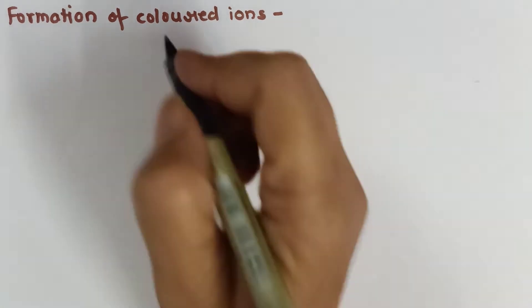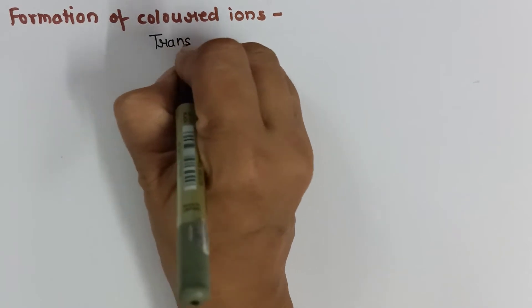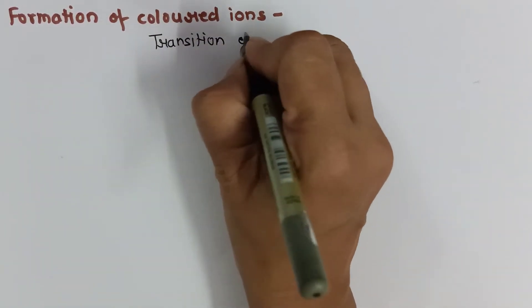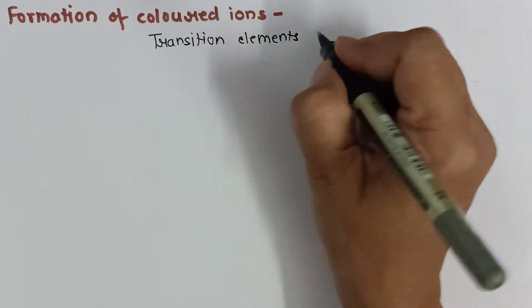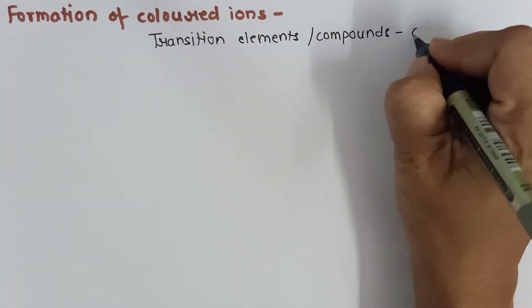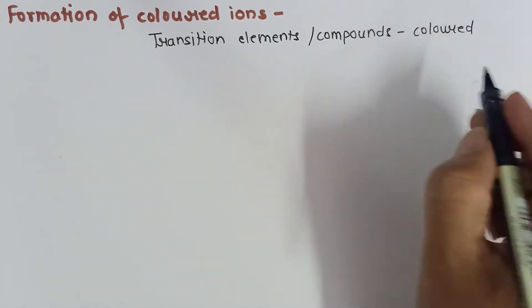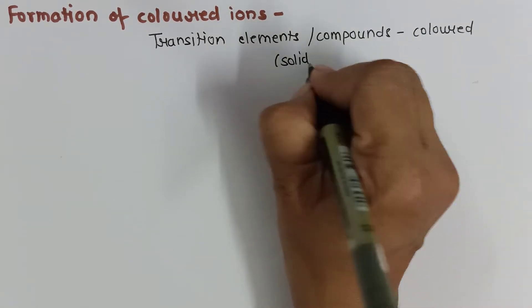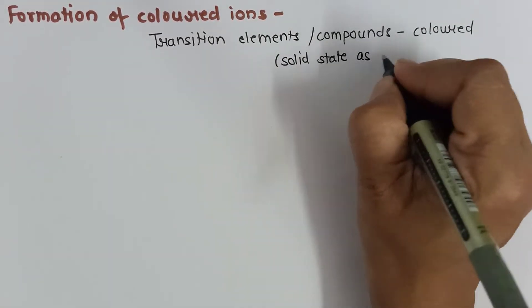In the last part of the video we discussed trends in transition elements like atomic radii and ionization potential. Today we will continue with the next trend: formation of colored ions. Most transition elements or their compounds are colored, and this color is maintained in both solid state and liquid state.